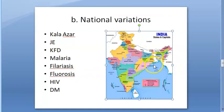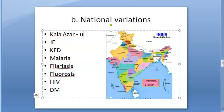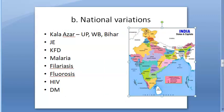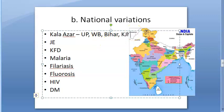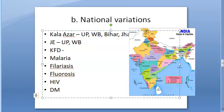Now let us look at national variations within India. Some parts of the country are more affected by certain diseases than others. Kala Azar is more common in Uttar Pradesh, West Bengal, Bihar, and Jharkhand because the phlebotomus insect vector is present there. Japanese encephalitis vaccination in the national immunization schedule is given only in certain states — West Bengal and Uttar Pradesh — because of its regional distribution.